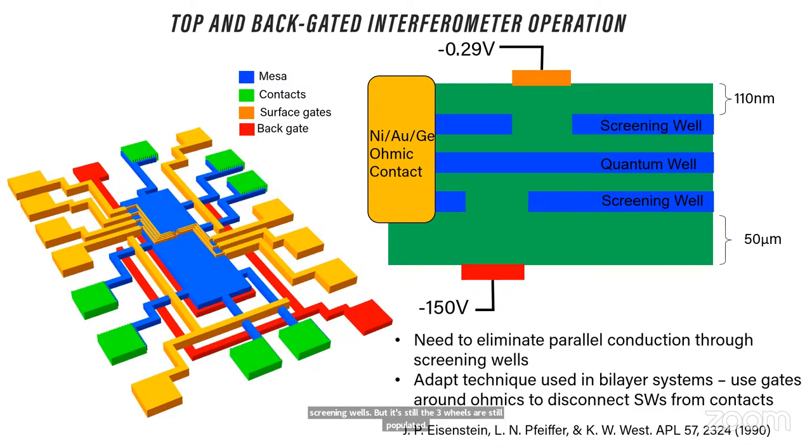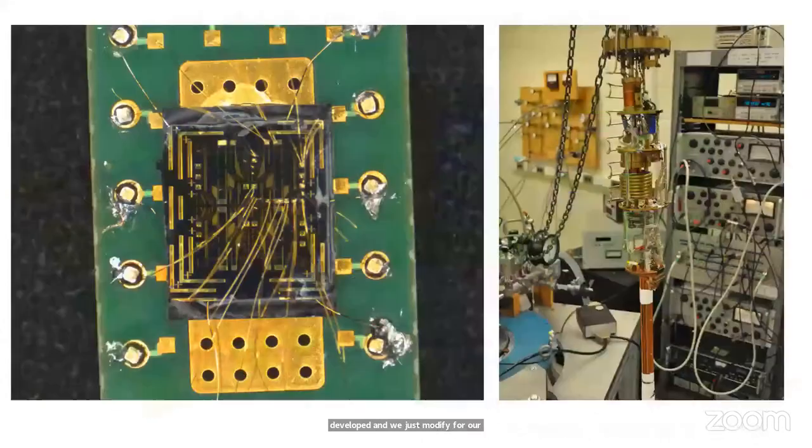And this is something we also adapted from another set of experiments from Jim Eisenstein back in the 90s. He was interested in correlated bilayers and physics that you can get, exciton condensates, and things like that. We modified his approach to apply to mesoscopic devices in three layers. But again, this is something that had been developed and we just modified for our purposes.